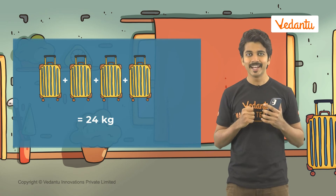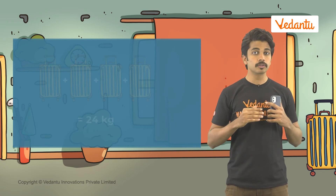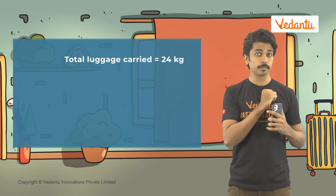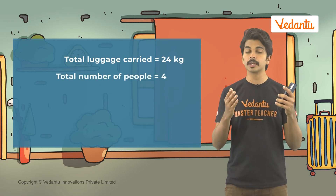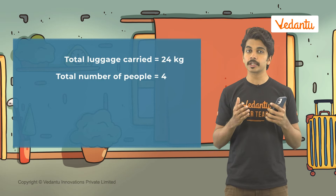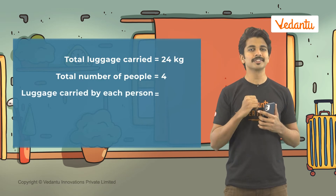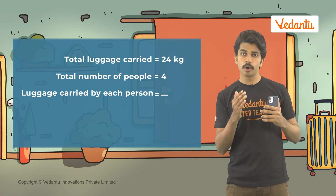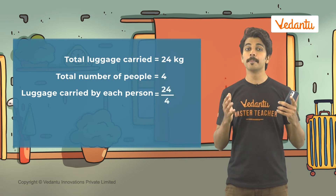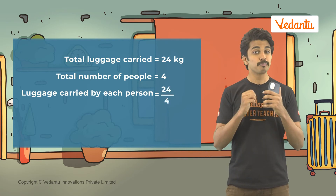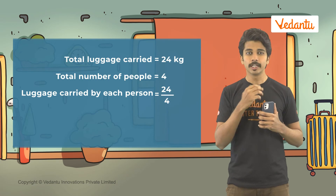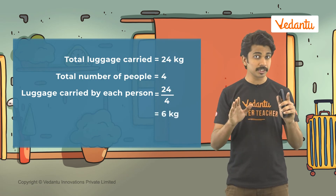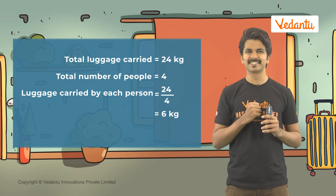Let's try. First, we need to find out how much luggage one person carried last time we made the trip. We can find it using the total luggage carried by four people. Since we do not have the exact value of each person's luggage, we can divide the total value by the number of people to get a rough idea. Dividing 24 by 4, we get 6. So each person carried about 6 kg.